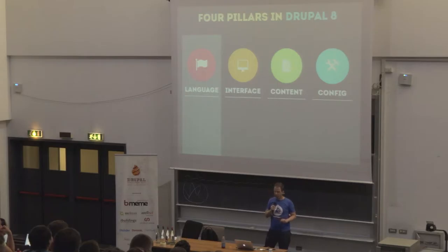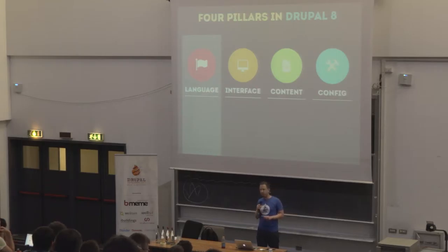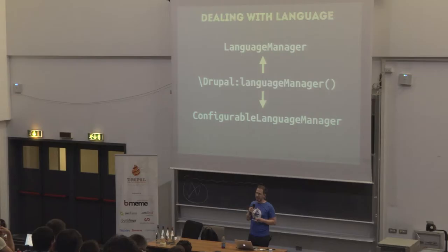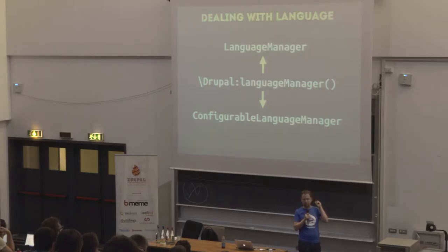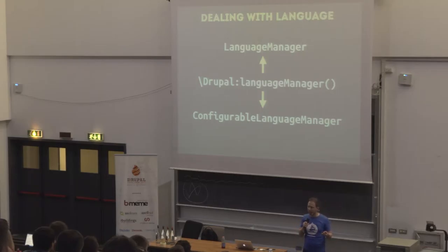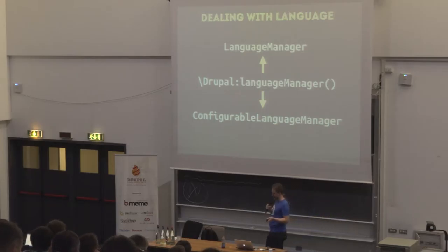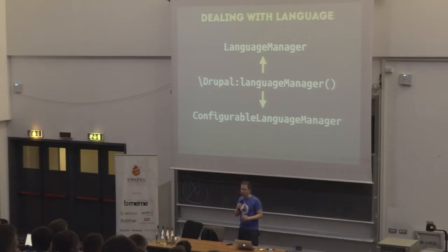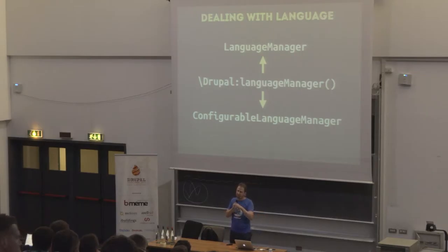Let's see code examples for the language system. There's a service called Language Manager that is globally accessible as Drupal Language Manager. There may be two different services based on what you have currently: by default it's the language manager provided by the system, which has a built-in fixed list of three languages. If you enable the Language module, it's replaced by the Configurable Language Manager provided by the Language module, which allows you to dynamically configure the list of languages.